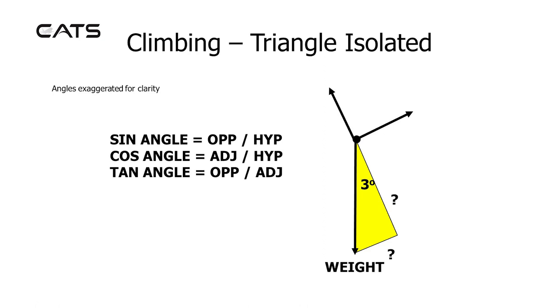These can be found using trigonometry. The sine of the angle equals opposite over hypotenuse, the cosine of the angle equals adjacent over hypotenuse, and the tan of the angle equals opposite over adjacent.